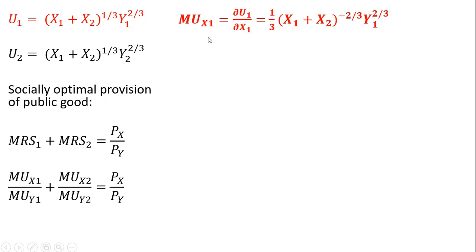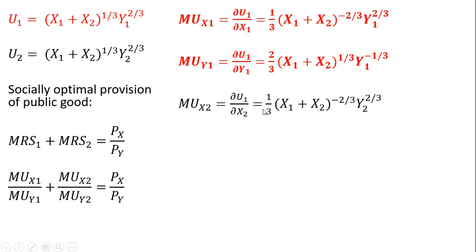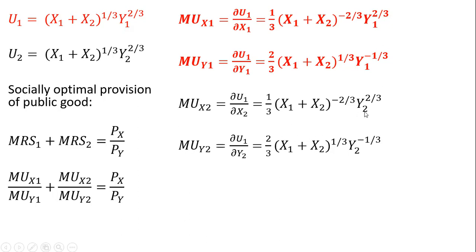We need to get the marginal utilities. Taking the partial derivative of person 1's utility function with respect to x subscript 1, we get back this result. Taking the partial derivative with respect to the private good, we get back this result. For person 2, very similar looking results — the only difference is y subscript 2 instead of y subscript 1.